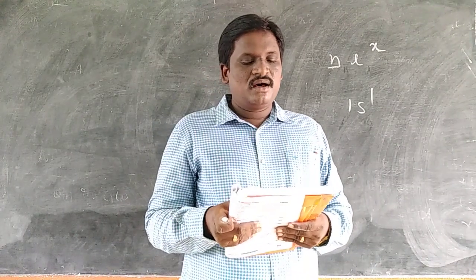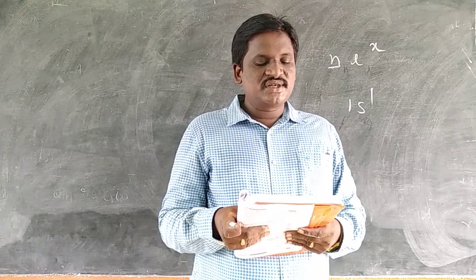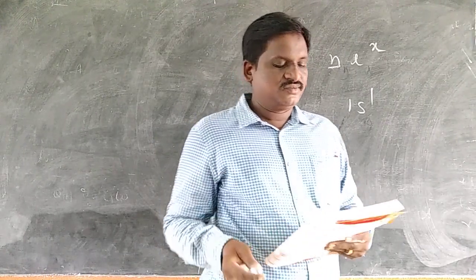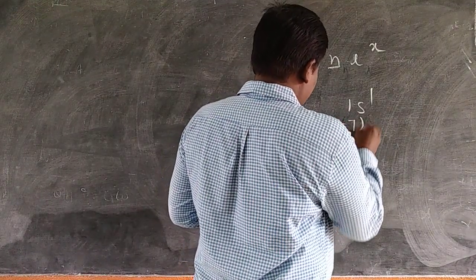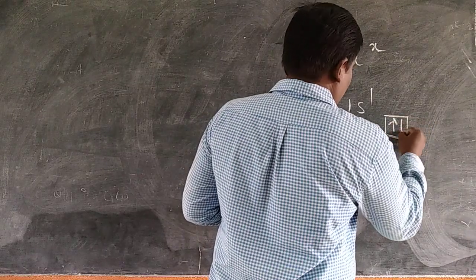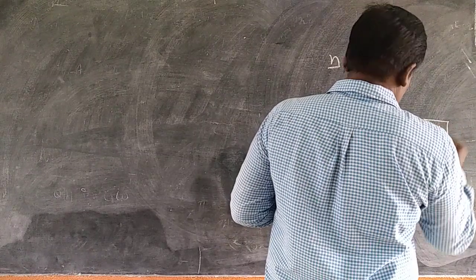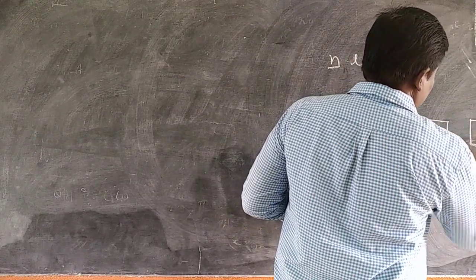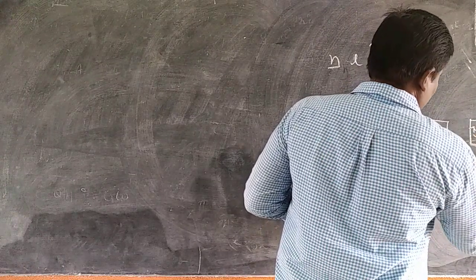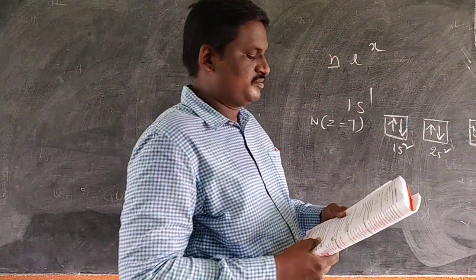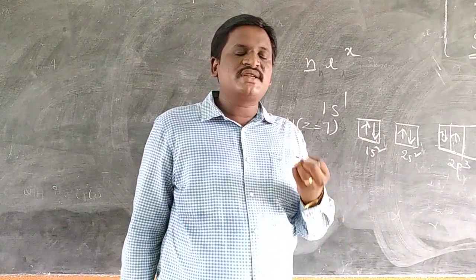Next question: following the orbital diagram, show the electronic configuration of the nitrogen atom — which rule does not support this? Nitrogen has atomic number Z equal to 7. The configuration is 1S2, 2S2, 2P3. Is this configuration right or wrong? This does not support Hund's rule.